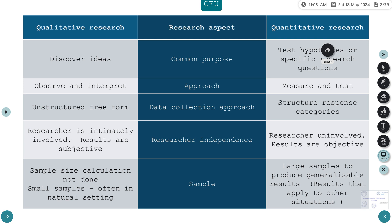The first thing is the common purpose. We are all aware that quantitative research is to test a hypothesis or specific research question; however, we discover new ideas during the process of a qualitative one. The qualitative one is an observe-and-interpret approach, while the quantitative one is a measure-and-test approach. The qualitative one uses unstructured or semi-structured free forms, while quantitative research uses structured response categories. In qualitative research, the researcher is intimately involved and the results are quite subjective, as opposed to quantitative where the researcher is uninvolved and the results are more objective.